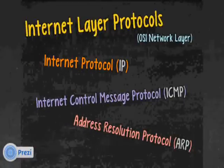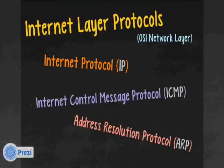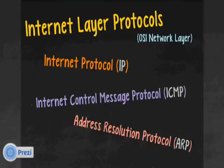Internet layer protocols map to the OSI network layer. The big one is IP, Internet Protocol. There's also Internet Control Message Protocol, ICMP, which sends error messages back and forth for things like destination unreachable. You've likely used ICMP indirectly with the ping command — ping uses two ICMP packets: an echo request sent to a destination, and the destination replies with an echo reply. Another one is Address Resolution Protocol, ARP, sometimes called the layer two-and-a-half protocol, because it maps IP addresses to physical addresses, sitting halfway between the internet layer and the network access layer.